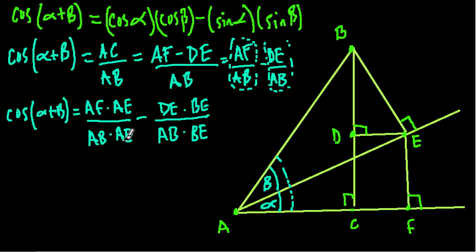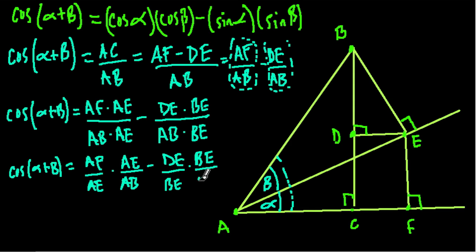So now I'm going to switch these terms around using the commutative property. And that will actually get me pretty close to what I need, which is cosine of alpha plus beta equals AF over AE, swapping the order of these two terms, times AE over AB. And same thing here, minus DE, swapping the denominator terms, over BE times BE over AB.